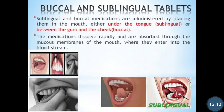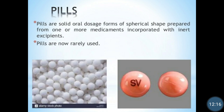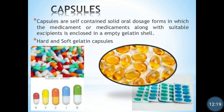The next solid dosage form is the capsule. All of you are familiar with capsules. Capsules are self-contained solid oral dosage forms in which the medicament or medicaments, along with suitable excipients, is enclosed in an empty gelatin shell. They are self-contained solid dosage forms in which a single drug or a mixture of drugs, along with suitable excipients like diluents, is enclosed in an empty gelatin shell.